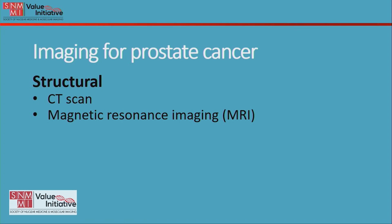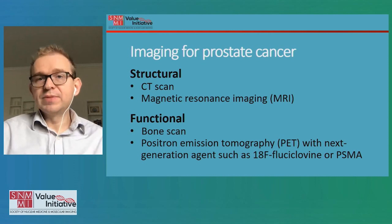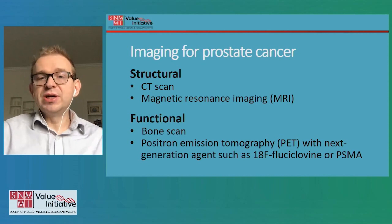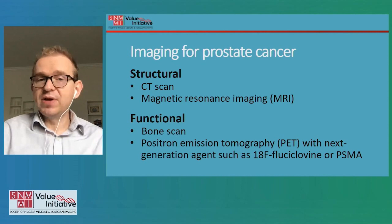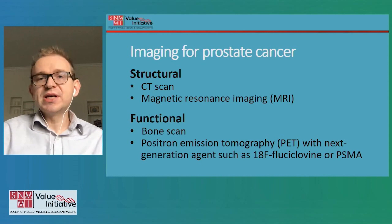In prostate cancer, imaging is commonly used. The two most common modalities are CT scan of the chest, abdomen, and pelvis, and MRI — usually of the prostate gland itself. Functional imaging also plays an important role. The classic method is a bone scan, used to look for spread of prostate cancer to the skeleton. More recently, next-generation PET imaging with agents such as F18 fluciclovine — also called Axumin — or PSMA-based agents, also called prostate-specific membrane antigen, have increased the sensitivity for detecting sites of prostate cancer and are helping change the face of modern prostate cancer care.